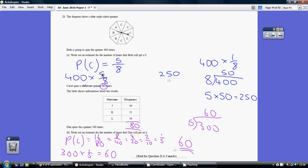Now, multiplying by 5 eighths is the same thing as dividing by 8, then multiplying by 5. So 400 divided by 8 I've done over here is 50, and then times that by 5 is 250.